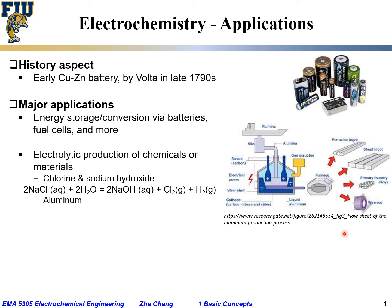Electrochemistry is also the underlying principle for production of important chemicals such as sodium hydroxide, or many important active metals such as aluminum. Electrochemistry is also the foundation for important processing such as electroplating or electrodeposition. For example, we want to plate copper over some other metals. In the electronics industry, we need to deposit metals — especially copper — onto circuits, and those quite often go through the electrodeposition process.